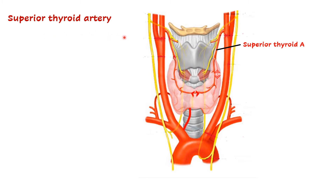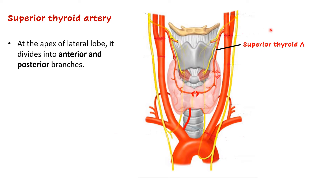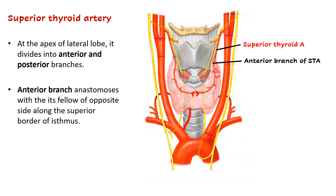Let us see the course and branches of the superior thyroid artery. It is the first anterior branch from the external carotid artery. It descends and gives branches to surrounding structures — one branch pierces the thyrohyoid membrane as the superior laryngeal artery to supply the larynx. It then reaches the apex or upper pole of the thyroid gland, where it divides into an anterior branch and a posterior branch. The anterior branch runs along the anterior border of the lobe and along the superior border of the isthmus, where it anastomoses with the same artery of the opposite side.